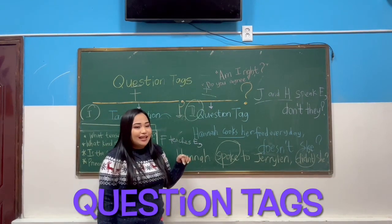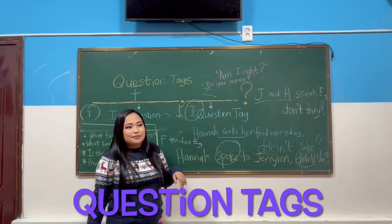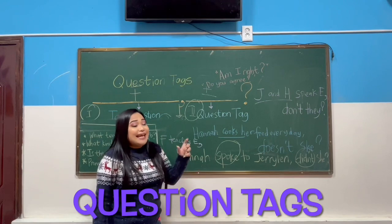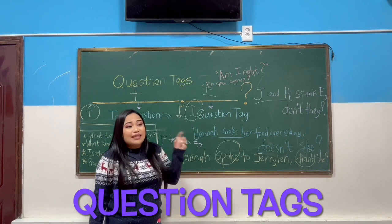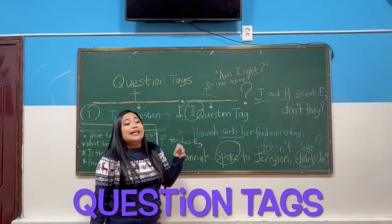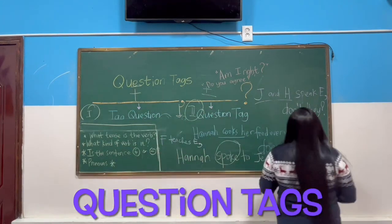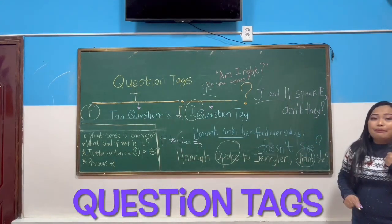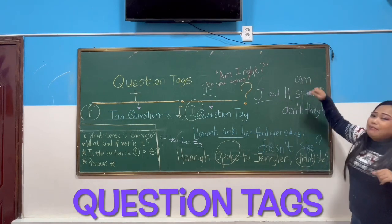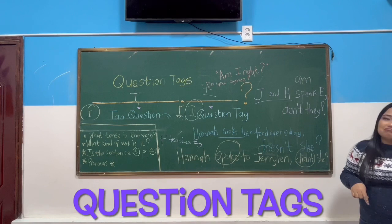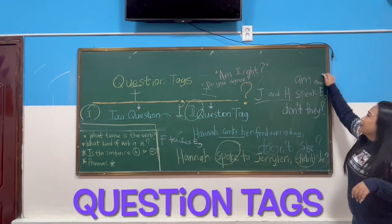'Jerry Lynn is married to Mehmet.' What is the negative of 'is'? 'Isn't she.' Very good. Now, what if the verb is 'am'? There is no 'amn't.' So 'am' becomes 'aren't' in the question tag. For example, 'I am Hannah — aren't I?'